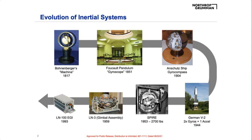We've all seen inertial principles in action — a spinning top was probably your first experience. An object rotating fast enough can stay in a fixed orientation, a principle mechanized by Frederick Bohnenberger. The word gyroscope was coined by Leon Foucault, coming from the Greek gyros (circle) and skopos (watcher) — a good description of Foucault's pendulum, which he used to sense and track the rotation of the Earth.